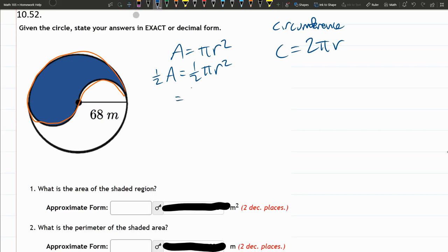And this is going to be one-half pi r. My radius is 68. We're going to square that. And this is all there is to it.